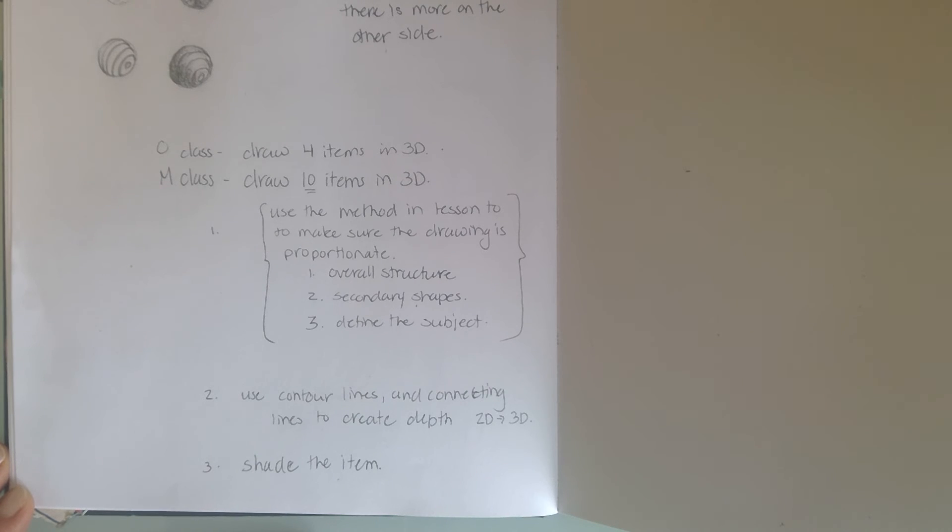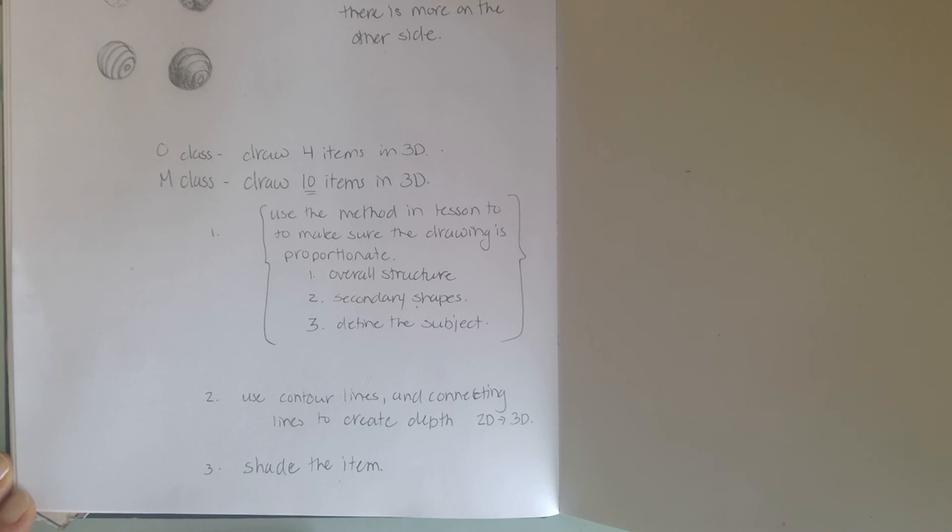This was shown in the previous lesson with the peppermill, and you all practiced a little bit with that in yesterday's class. Second thing: use the contour lines and connecting lines to create depth. So if you're drawing in perspective - you're drawing a square and you want to change that into a three-dimensional shape - you're going to duplicate that same square, connect the lines, and that will create depth.